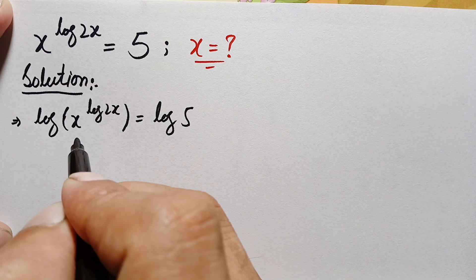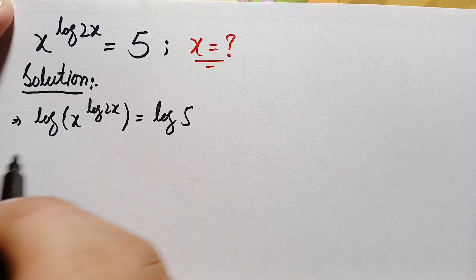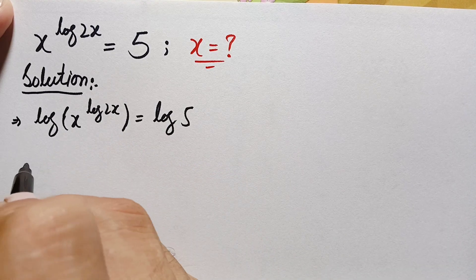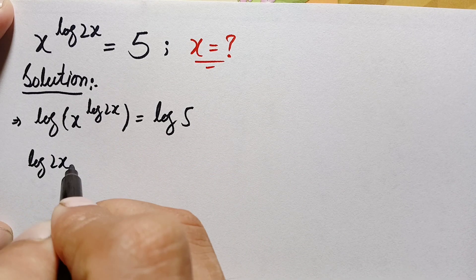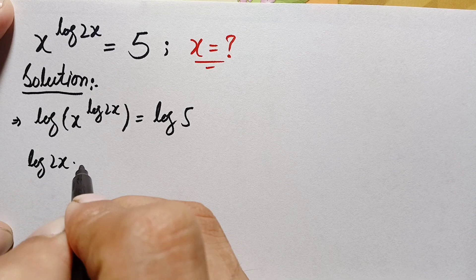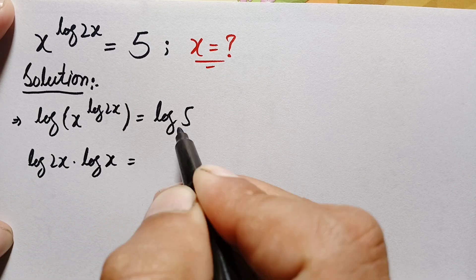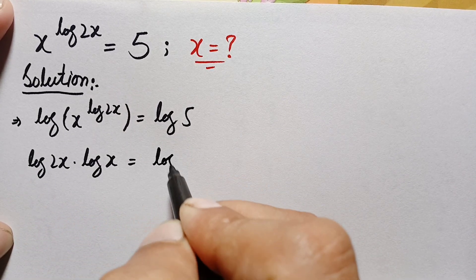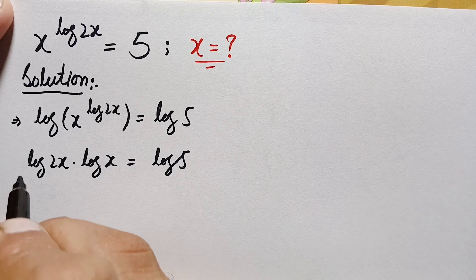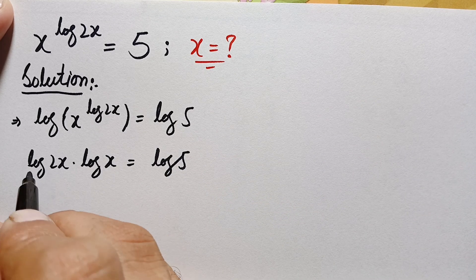On the left hand side, we will use a log property and move this power to the front of the log. So this becomes: log of 2x times log of x is equal to log of 5.